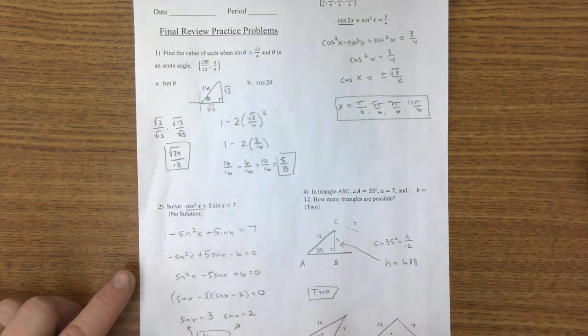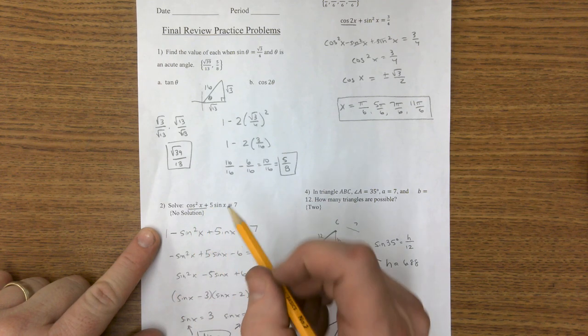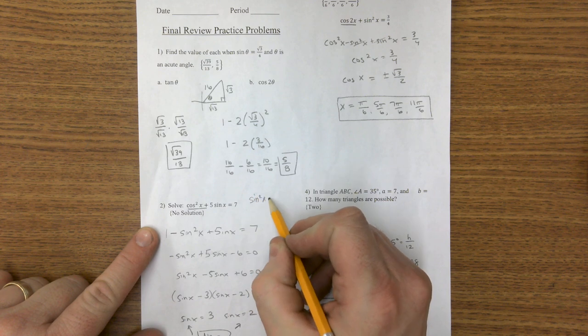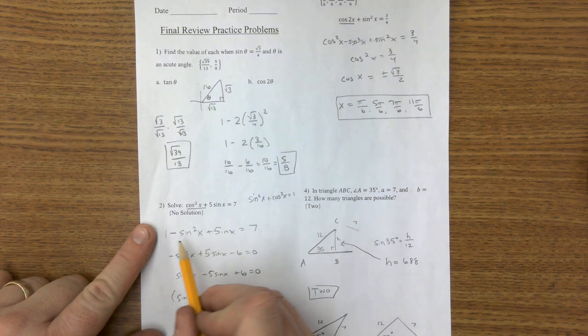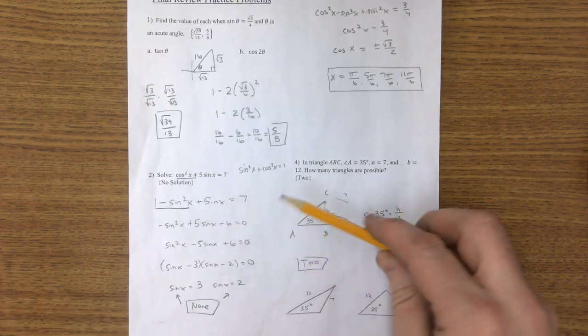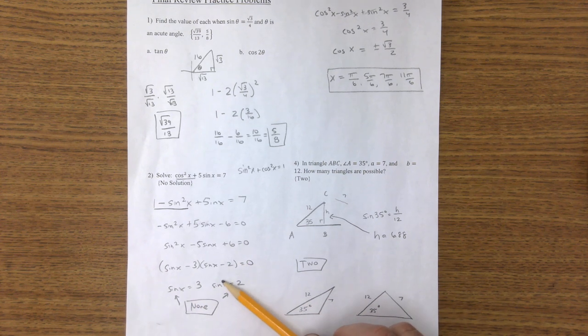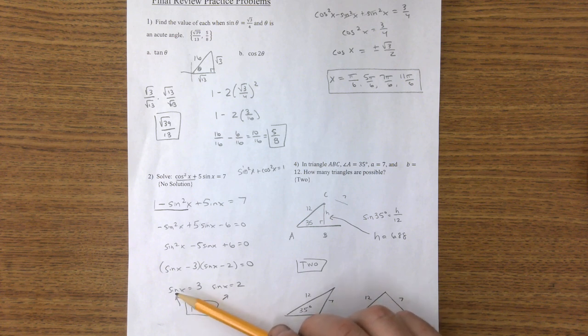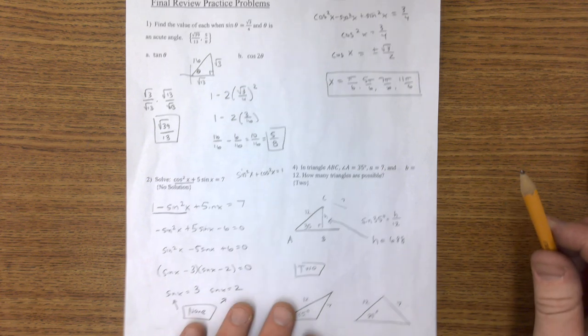On the second problem, I can't solve this because there's cosines and sines, but I do know this trig identity, that sine squared of anything plus cosine squared of anything equals 1. So I can replace that cosine squared with that version of it. I can do the work here, factor it, and I have sine of x is 3 and sine of x is 2. You can't find an angle that has a sine of 3. Sine's between negative 1 and 1, so there are no solutions.